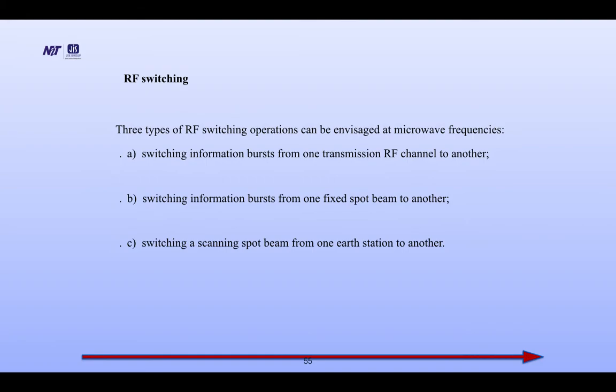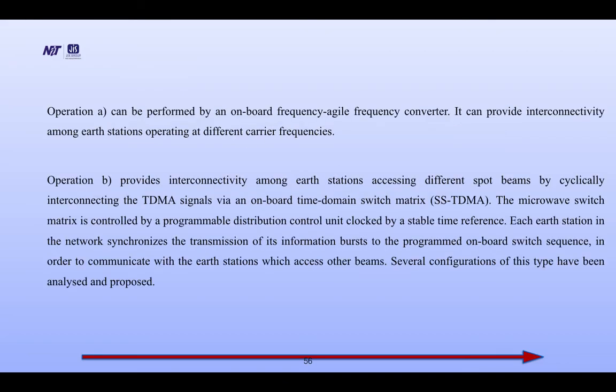RF switching: three types of RF switching operations can be investigated at microwave frequency. A: switching information bursts from one transmission RF channel to another. B: switching information bursts from one fixed spot beam to another. C: switching a scanning spot beam from one RF station to another. Operation A can be performed by an onboard frequency-agile frequency converter, providing interconnectivity among RF stations operating at different carrier frequencies.